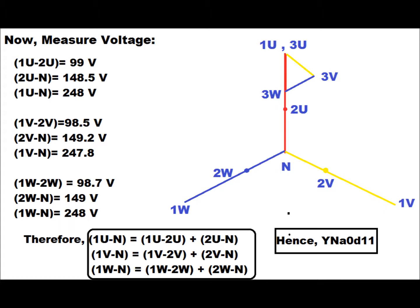We can conclude that the measured voltage between primary red-to-neutral, primary yellow-to-neutral, and primary blue-to-neutral is equal to the sum of the primary-to-secondary voltage plus secondary-to-neutral voltage for each respective phase. Hence, combining all these conditions, it is confirmed that the vector group is YNA0D11.